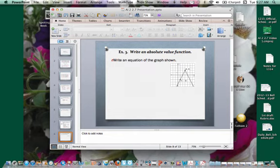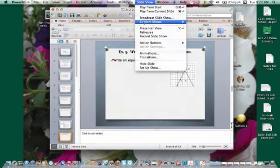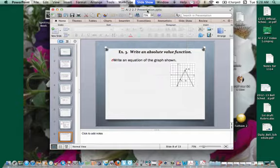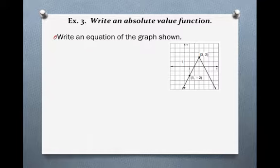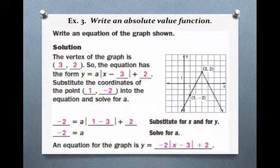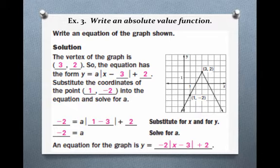Welcome back. Let's pick up with Example 3. We're going to write an absolute value function. This time we're going to get the information from the graph shown and write the equation. Our equation is going to be in the form Y equals A times the absolute value of X minus H plus K.